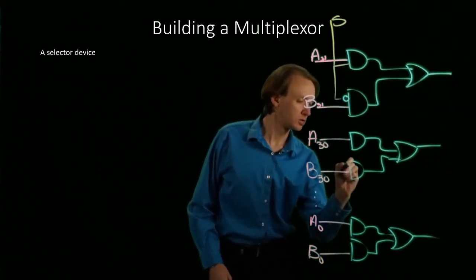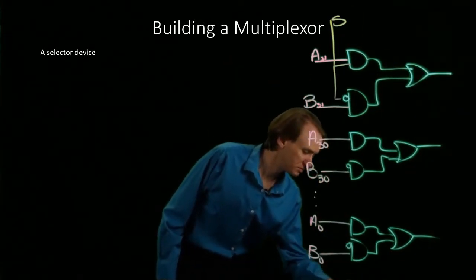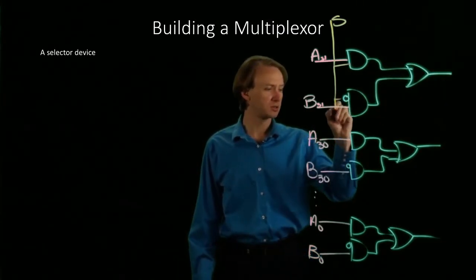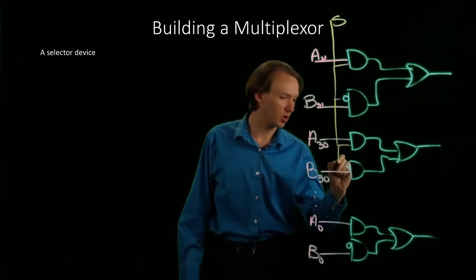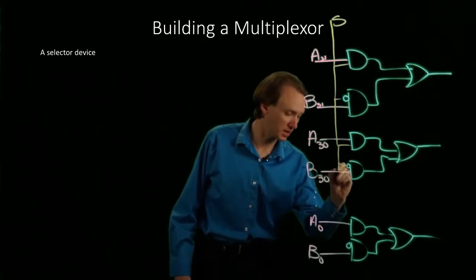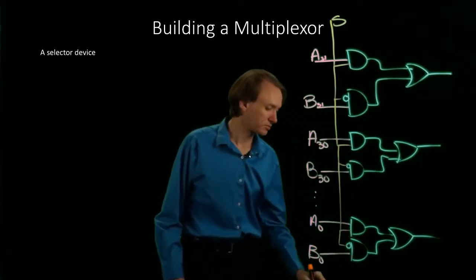And to control these, I'm going to do it the same way I did before. I will put A NOT before the selector bit on each of these B lines. And then I'm just going to connect the selector bit to all of these new AND gates that I've got.